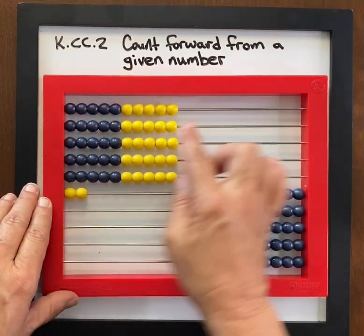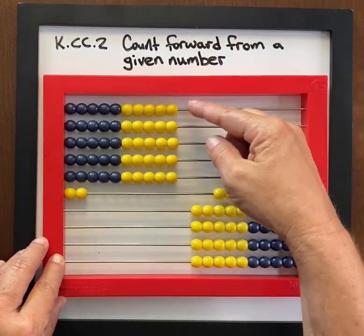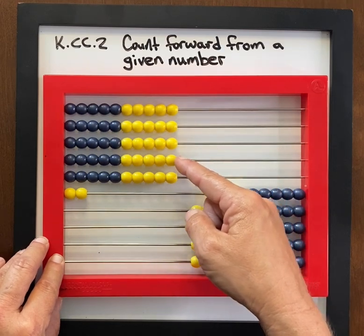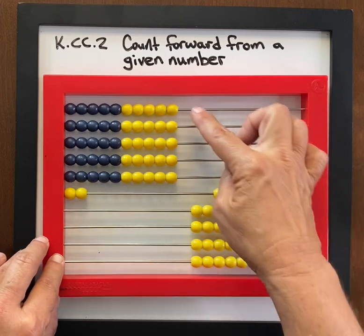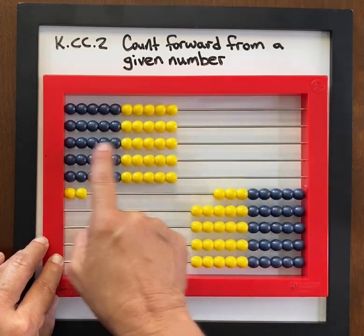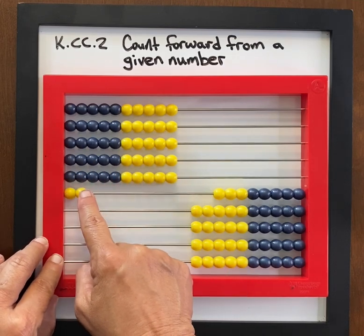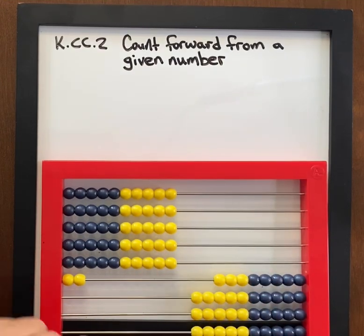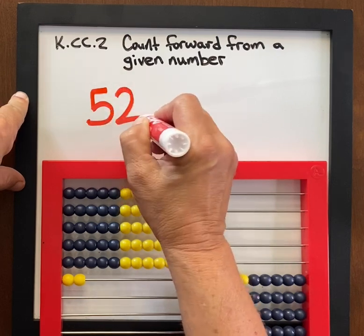We've done a lot of work with 10s and 1s with our abacus. So I'm expecting students to be able to say 10, 20, 30, 40, 50, 51, 52 — or they will say 1 ten, 2 tens, 3 tens, 4 tens, 5 tens, 5 tens 1, 5 tens 2. Then we can use that language to help us write 5 tens 2.